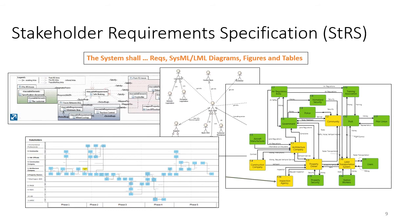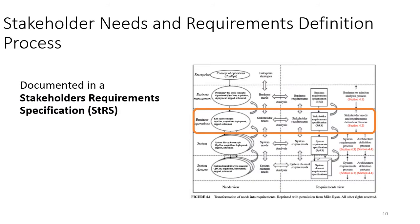The stakeholder requirements specification looks like a traditional requirements spec, containing requirement statements in system shell form as well as SysML and LML diagrams, figures, and tables. To put this in context: in the previous video we generated a Business Requirements Specification (BRS) through the business or missions analysis process, and that BRS is an input used to generate the stakeholder requirements specification as part of this stakeholder needs and requirements definition process.